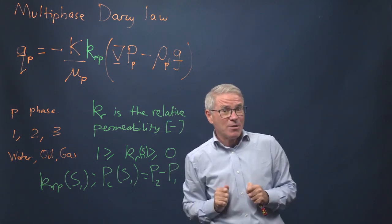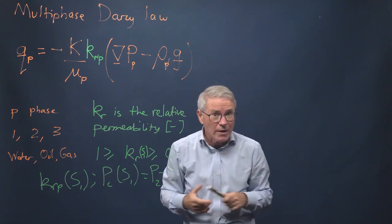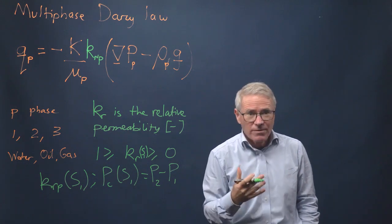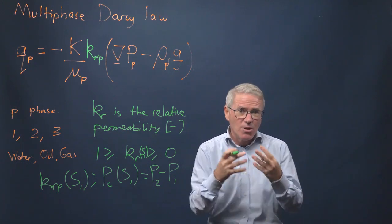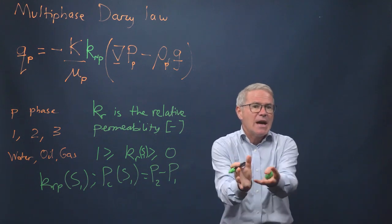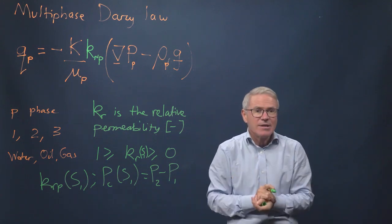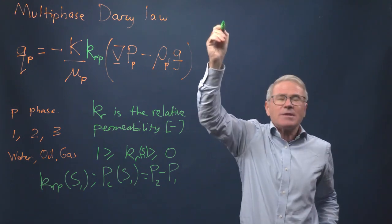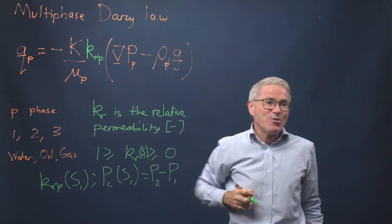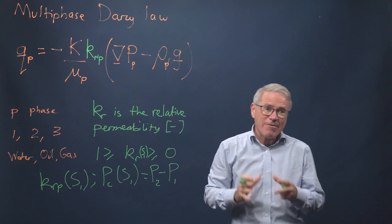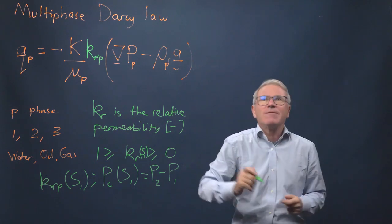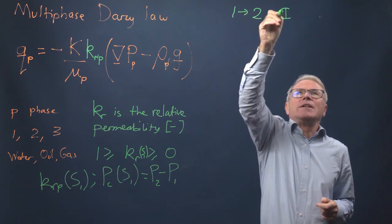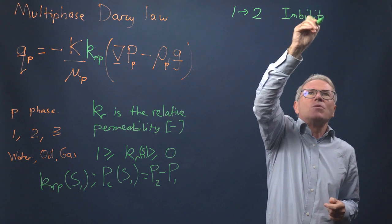Let's talk about what these relative permeability functions look like. I'm going to look at the relative permeability for water flooding. We assume that a non-wetting phase has entered the pore space of a porous medium, and now the wetting phase is going to displace the non-wetting phase. This is a water-wet or hydrophilic system, where phase one displaces phase two — an imbibition displacement.